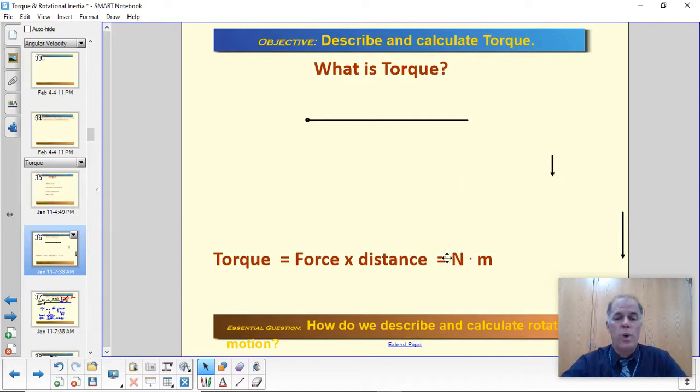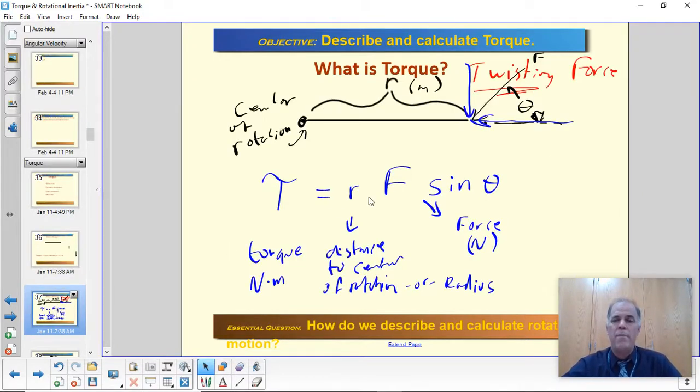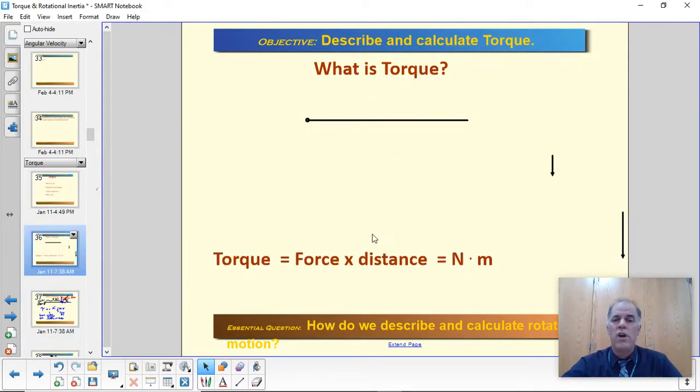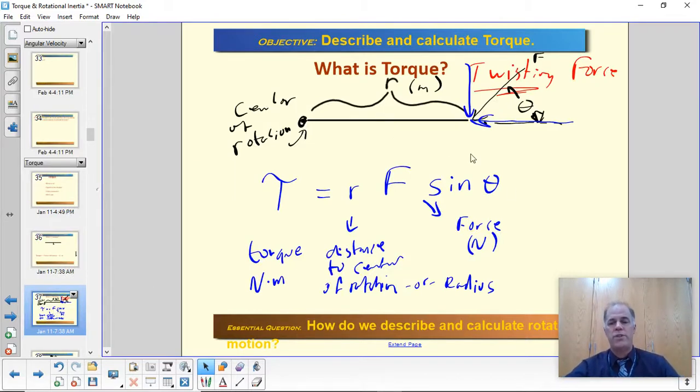All right, so the units of torque turn out to be newton meters, because force is always in newtons and distance is always in meters. So newton meters is the units of torque. Now, there's also a little bit more to this, so I'm going to show you this diagram here. This, what we just did, assumed that the forces are always perpendicular to the stick, that the stick is horizontal and the forces are pulling straight down. But that's not always the case, so sometimes we have to throw in this extra term here, this sine theta.